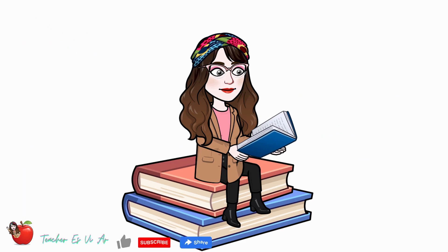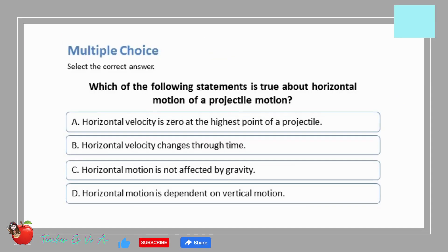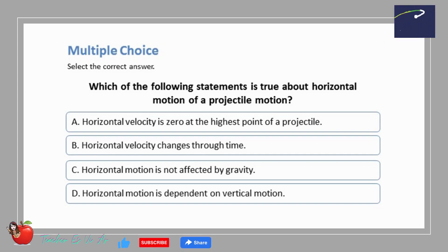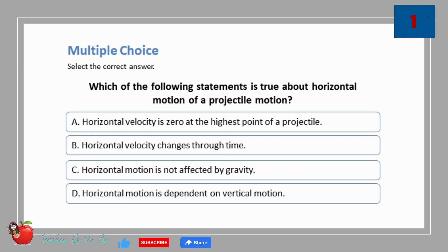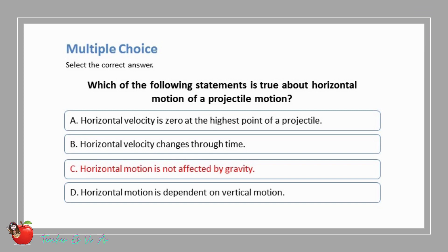There will be an evaluation of your understanding of the lesson. Are you ready? Let's start. Multiple choice — select the correct answer. Which of the following statements is true about the horizontal motion of a projectile? A. Horizontal velocity is zero at the highest point. B. Horizontal velocity changes through time. C. Horizontal motion is not affected by gravity. D. Horizontal motion is dependent on vertical motion. The correct answer is C: horizontal motion is not affected by gravity.